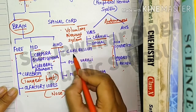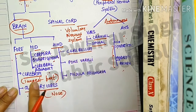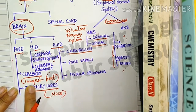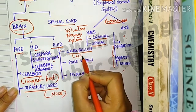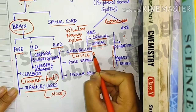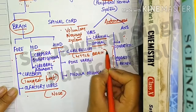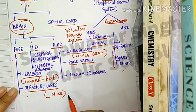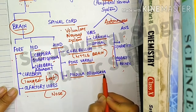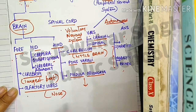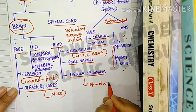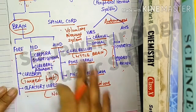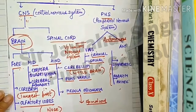The hindbrain contains three major parts: cerebellum, also known as the little brain; pons varuli; and medulla oblongata, after which the spinal cord begins. This completes the flowchart of the brain.